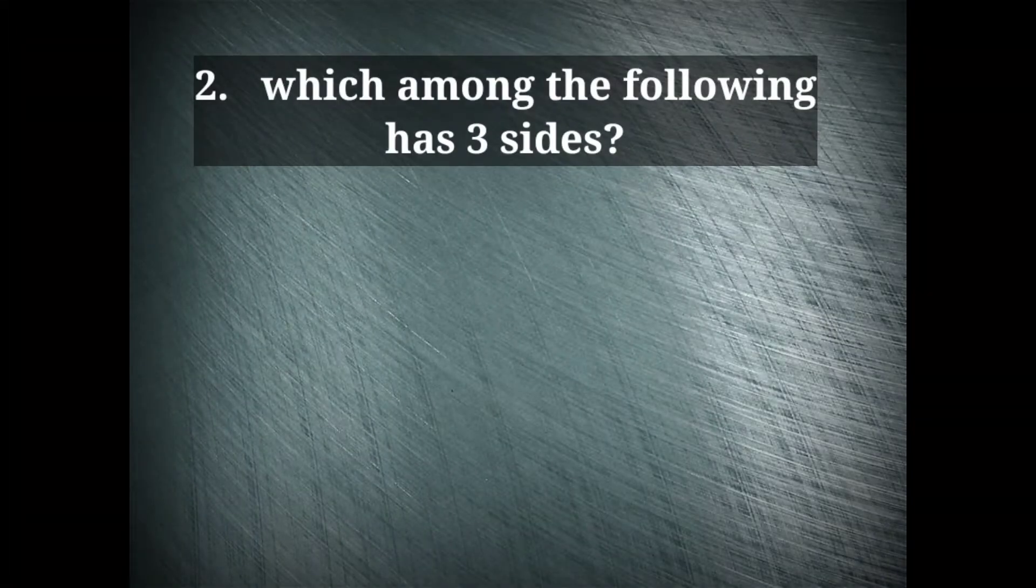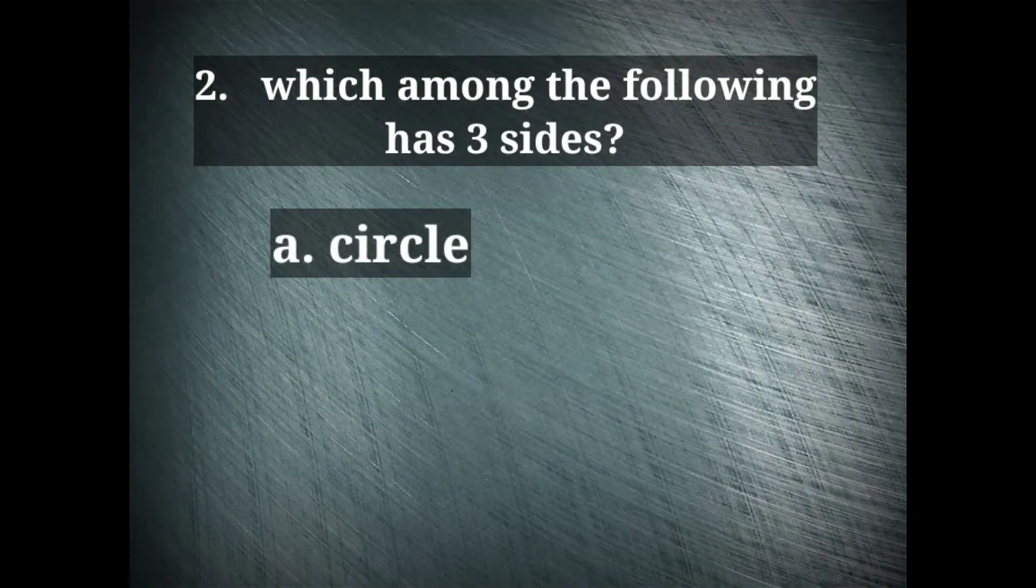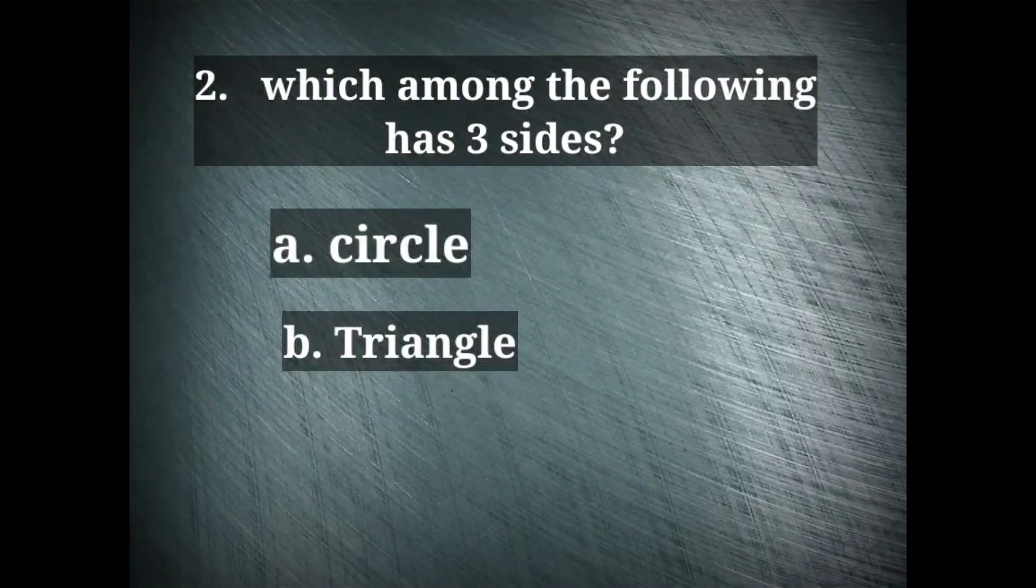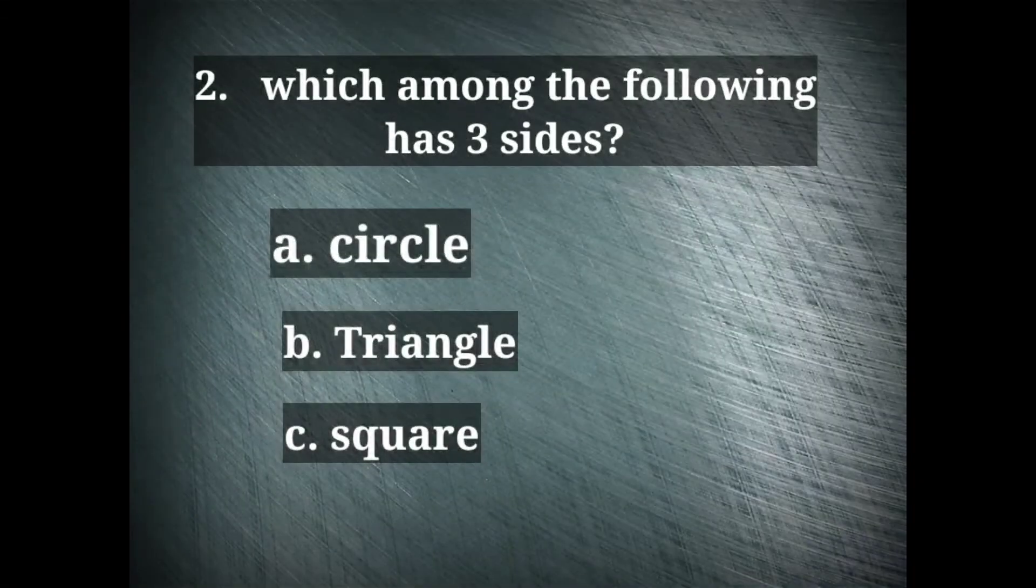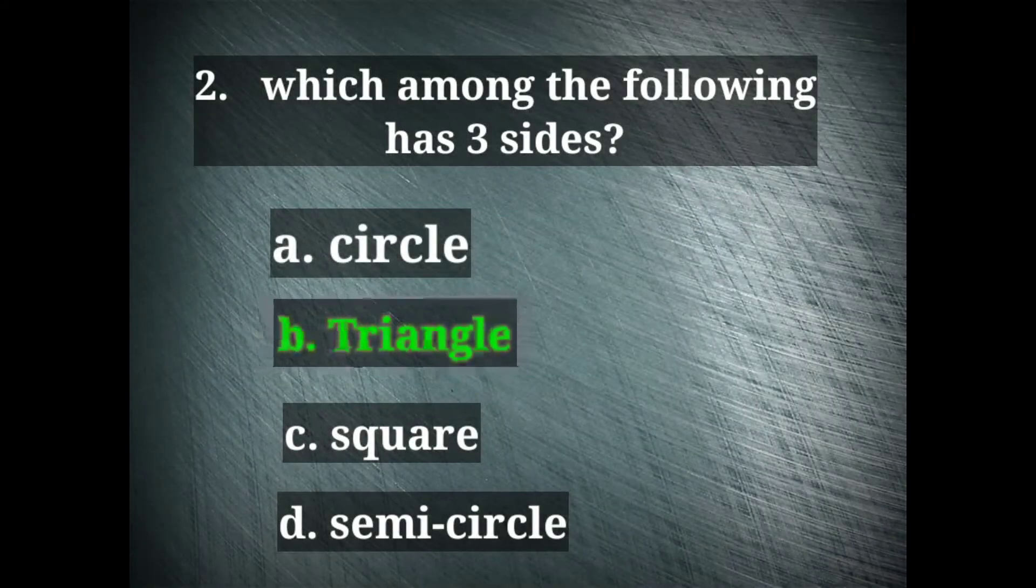Next question, which among the following has three sides? The options we have are circle, triangle, square and semicircle. The correct option here is option B, triangle.